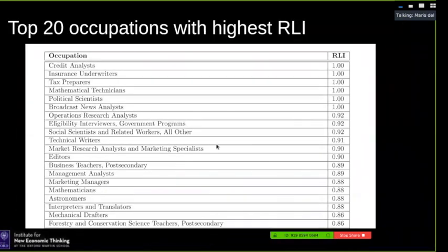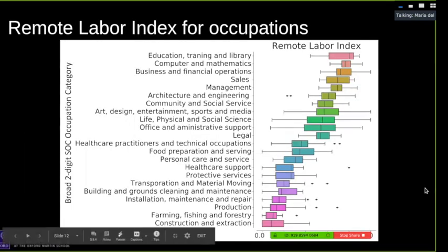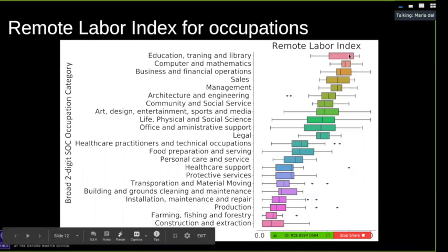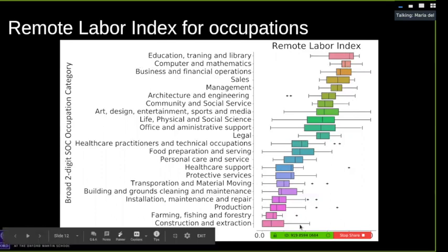If we look at the top 20 occupations with the highest Remote Labor Index, we find things like credit analysts and mathematicians — essentially things that can be done remotely. At the bottom we see things like bus drivers and car repair technicians — things that can definitely not be done at home, requiring specialized equipment or a laboratory. At the broad occupation level, education can generally be done remotely, as can computer and mathematics roles. What cannot be done remotely includes construction, transportation, farming, and production.